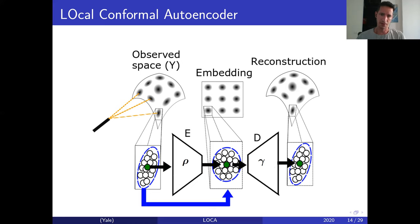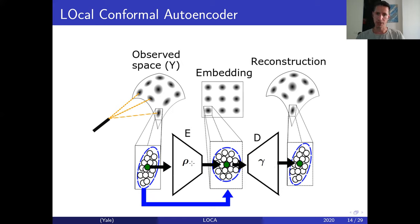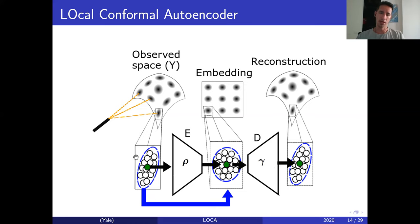This local conformal autoencoder observes samples in bursts — as shown in the top left, the bursts are small ellipses which can be thought of as heated points on a surface using a laser. Each burst is pushed forward through the encoder, parameterized by rho using a neural network. In the embedding space we're trying to make this ellipse a circle — making it isotropic — and then pushing it back through the decoder to reconstruct an ellipse and place it exactly where it was in the original observed space. The encoder-decoder pair is trained by first taking a gradient step from the encoder using the whitening loss, and then taking steps through the decoder and encoder using the reconstruction loss.